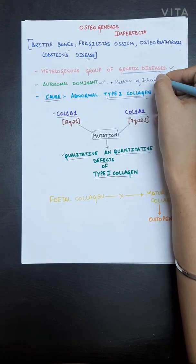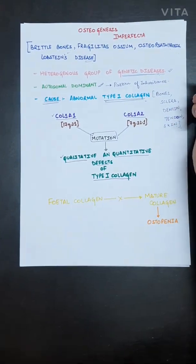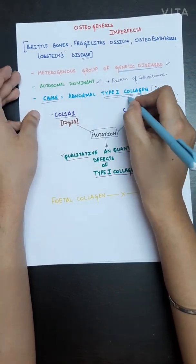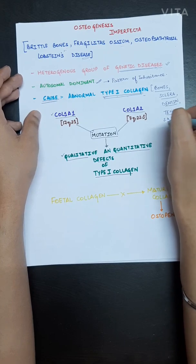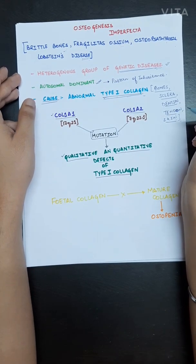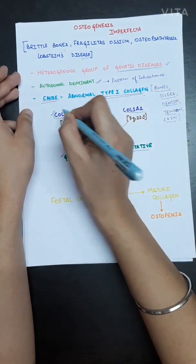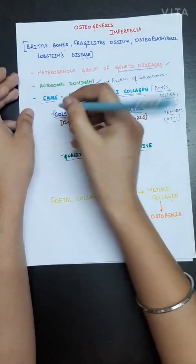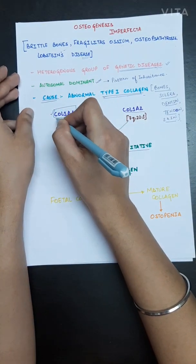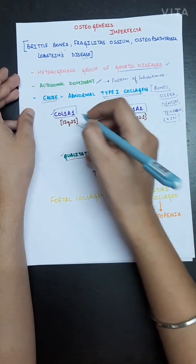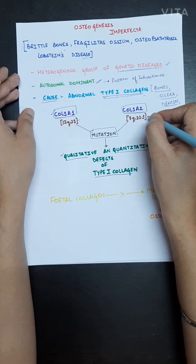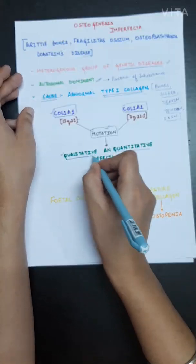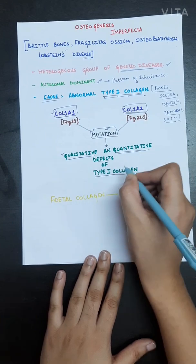The basic cause of osteogenesis imperfecta is abnormal type 1 collagen. This type of collagen is found in bones, sclera, dentine, tendons, and skin, so defects will be seen in these tissues. There are two genes — COL1A1 and COL1A2 — present on 17q21 and 7q22.1 respectively. Both genes get mutated, causing qualitative as well as quantitative defects in type 1 collagen.